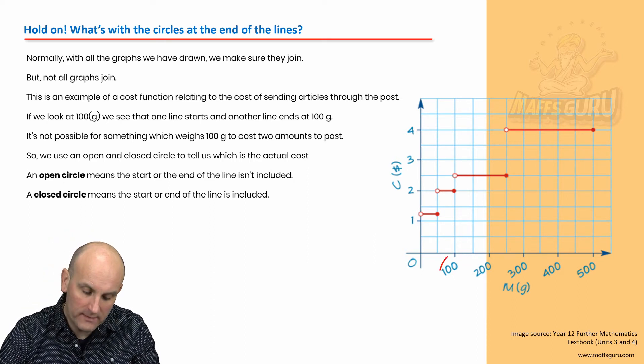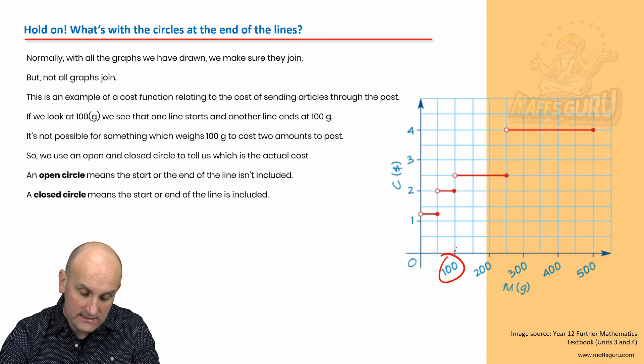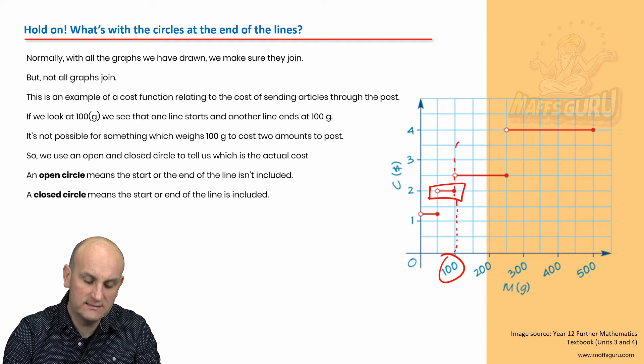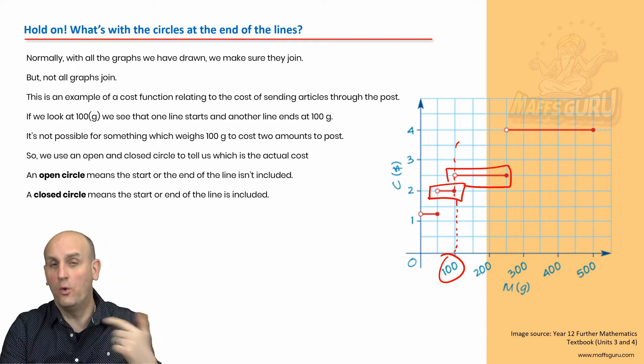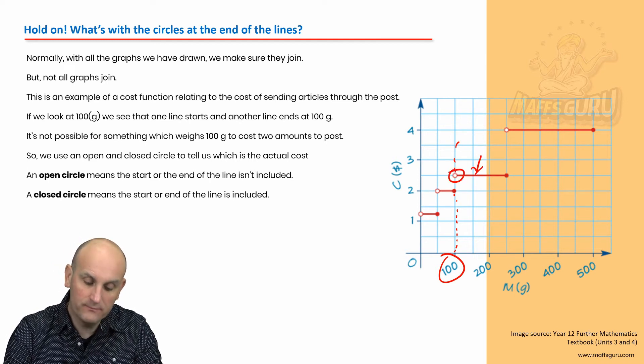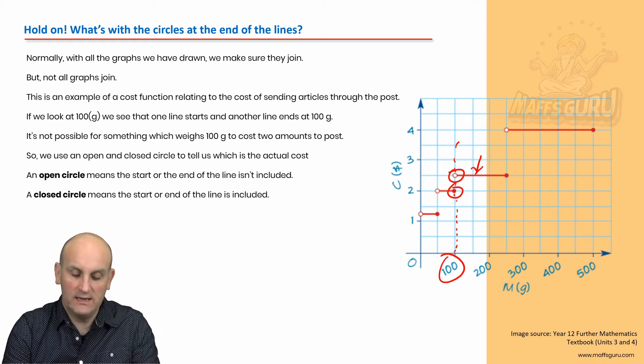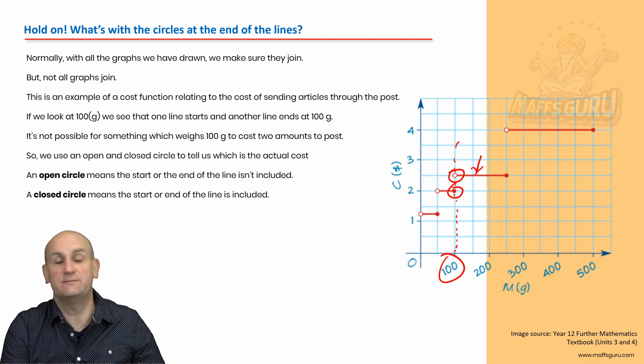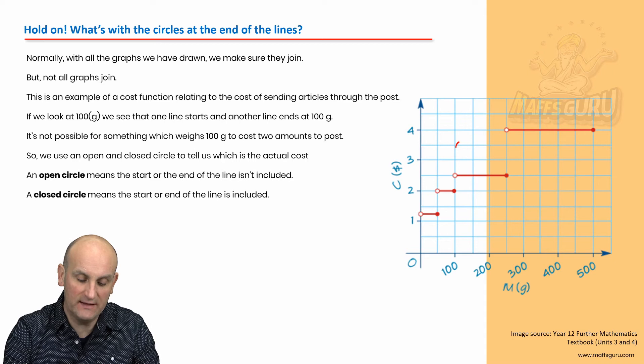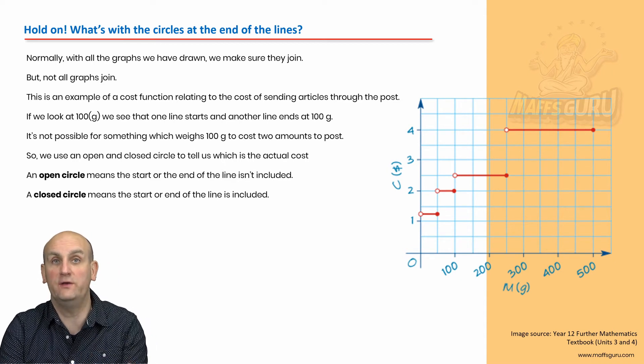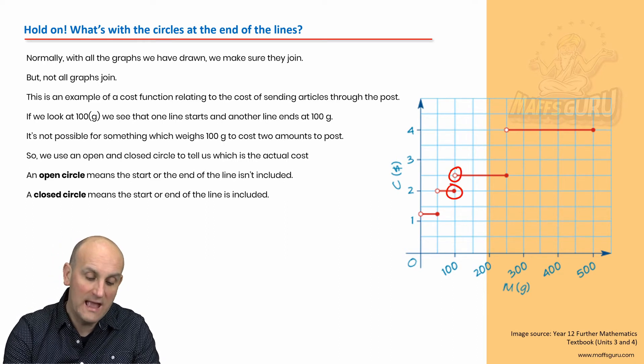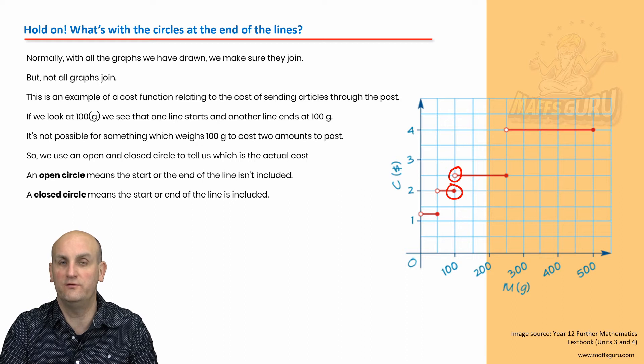Well, if we look at 100 grams and let's go up, what do we notice? We notice that there are two lines which effectively start or end at 100. Do you notice that? This line here seems to have a point that starts at 100. And this point here has, or that line there has a point that ends at 100. So by looking at this graph, what that's trying to suggest, if I didn't have those circles on it, is that if I walked into the post office with a package that was 100 grams, they would charge me both $2 and $2.50.